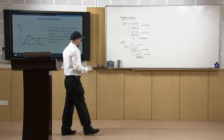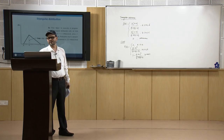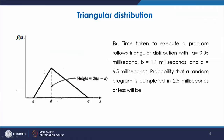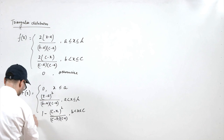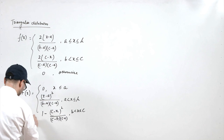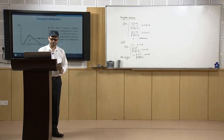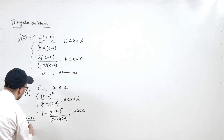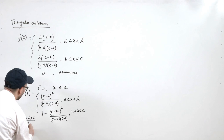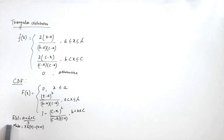For the triangular distribution, the mode occurs at b — the point of maximum probability. The mean E(x) = (a + b + c) / 3. The mode can also be expressed as 3 * E(x) - (a + c). These are the key formulas for the triangular distribution.